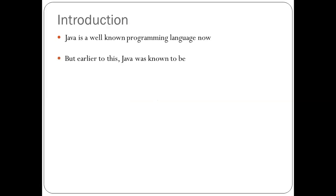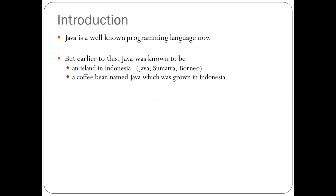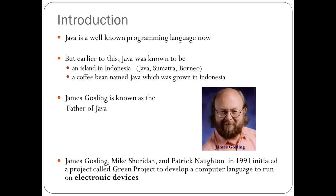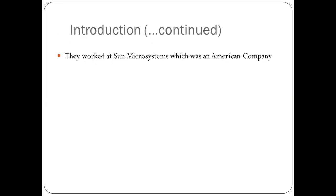Earlier, Java was known to be an island in Indonesia. Java, Sumatra and Borneo are the three islands that constitute Indonesia. It was also known as a coffee bean which was grown in Indonesia. James Gosling is known as the father of Java. James Gosling, Mike Sheridan and Patrick Norton in 1991 initiated a project called the Green Project to develop a computer language to run on electronic devices. They worked at Sun Microsystems, which was an American company.